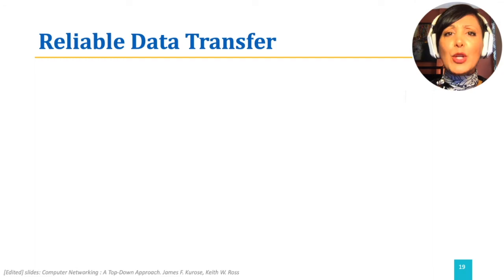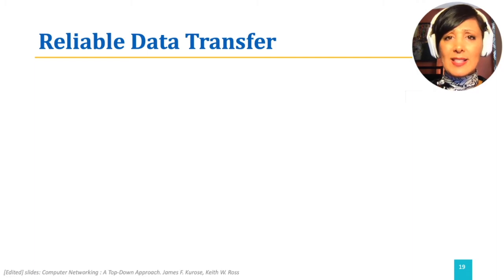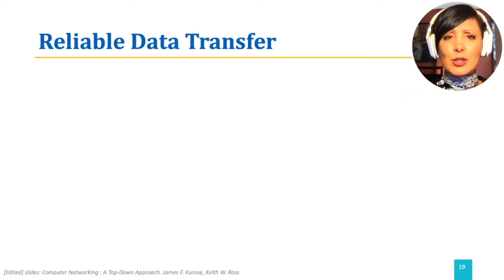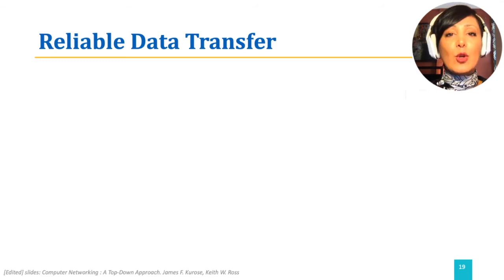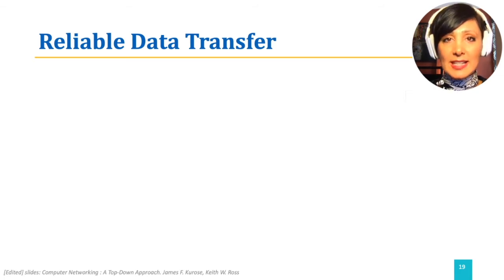For example, when you want to download a file using a file transfer application, you do not want only a portion of the file you asked for. You also do not want it to be presented to you in any different order. You need to know that the file is delivered to you properly, and therefore the file transfer application needs to ensure reliable data transfer.